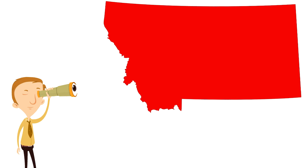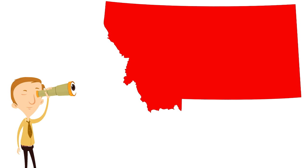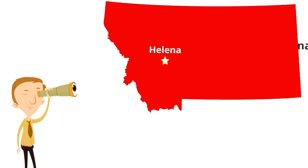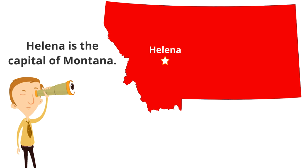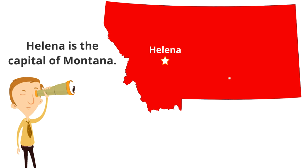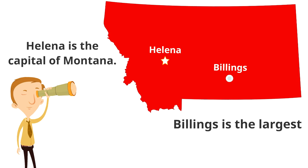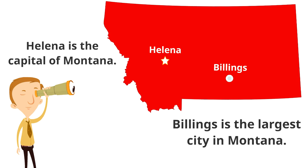Now we're going to look at two major cities in the state of Montana. The first city is Helena — Helena is the capital of Montana and is in the western part of the state. Then in the south central part of the state is the city of Billings, which is the largest city in Montana.